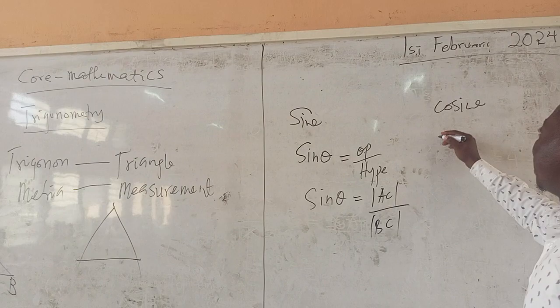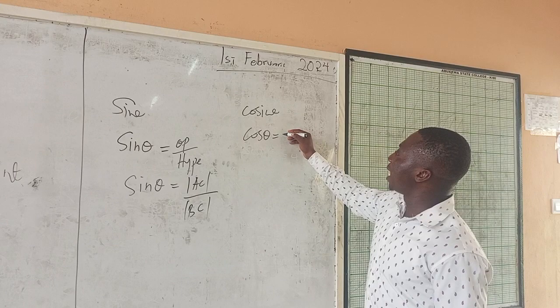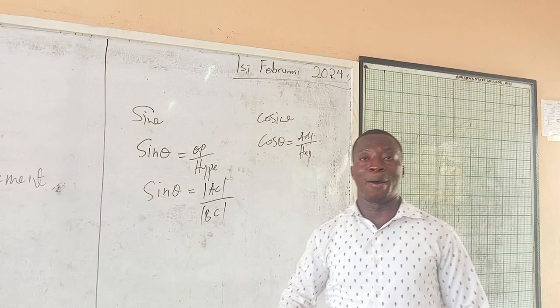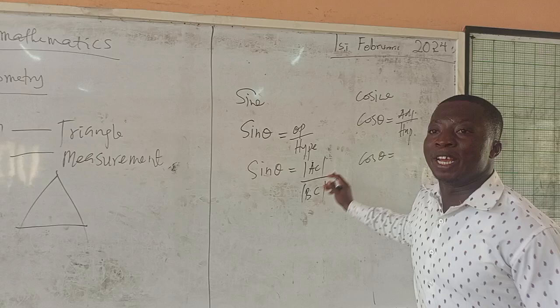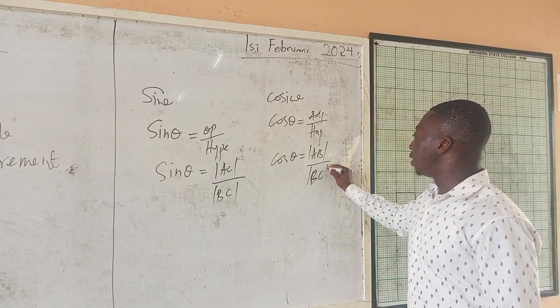Moving on to cosine: cosine of the angle equals the adjacent over the hypotenuse. Per the diagram, the adjacent side is line AB, and the hypotenuse is line BC. Therefore, cos theta equals AB over BC.